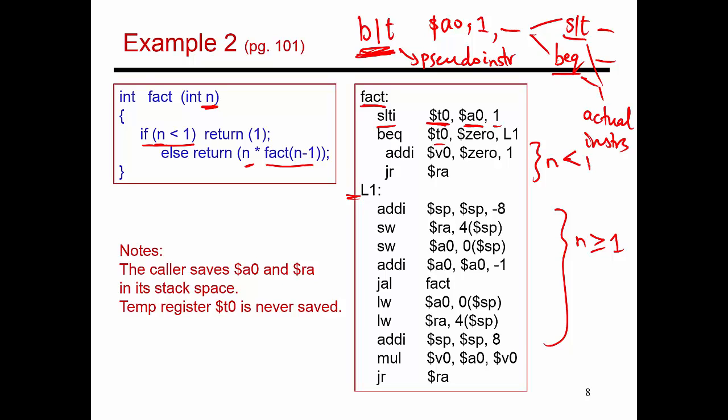So if n less than 1, then I need to return the value 1. That is very easily done. All I have to do is place 1 into V0, which is the return register, and then hand control back to my caller. And I do that by adding 0 and 1 and placing it into V0, and then jumping to the return address.